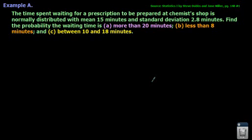This problem is from our textbook, page 148, number 1. It says the time spent waiting for a prescription to be prepared at a chemist's shop or pharmacy is normally distributed with a mean of 15 minutes and standard deviation of 2.8 minutes. Find the probability the waiting time is: A, more than 20 minutes; B, less than 8 minutes; and C, between 10 and 18 minutes.